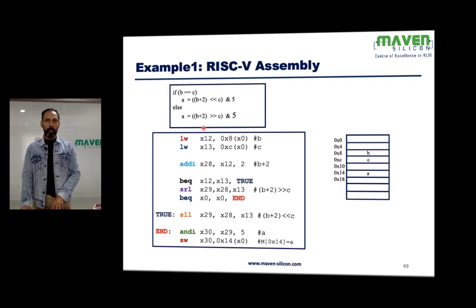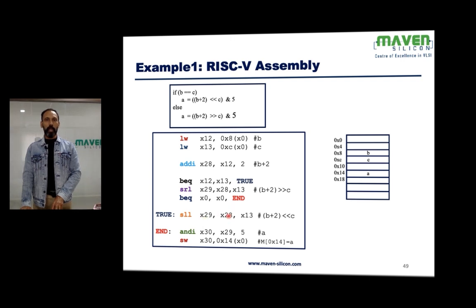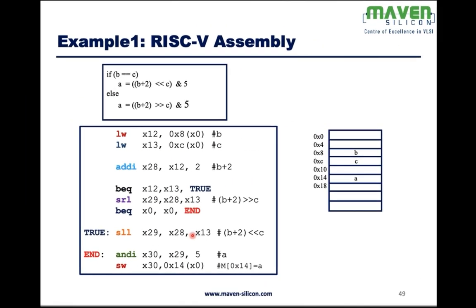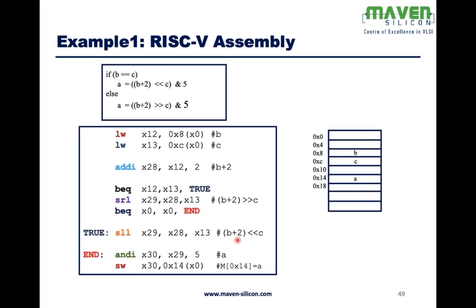For both expressions, b plus 2 is common. We compute b plus 2, which is x12 and 2 — this involves a constant, so we use ADDI. The temporary register x28 holds b plus 2. Now, if b equals c (x12 equals x13), then we need to do a left shift. So we use shift left logical (SLL): x28 (which is b plus 2) shifted left by x13 (which is c), and the result is stored in x29.